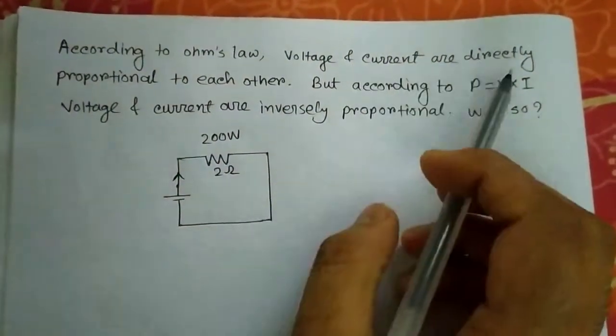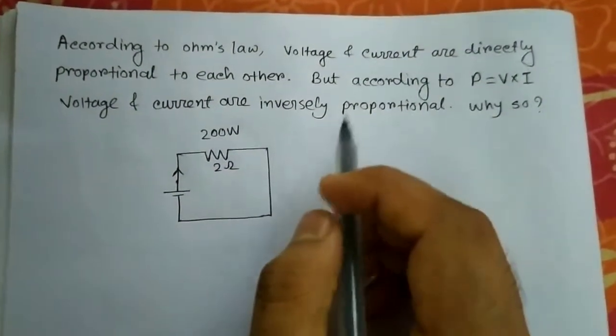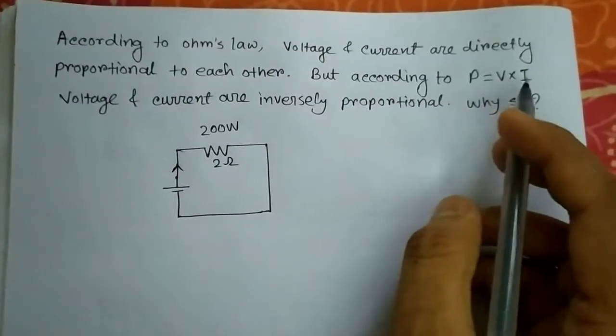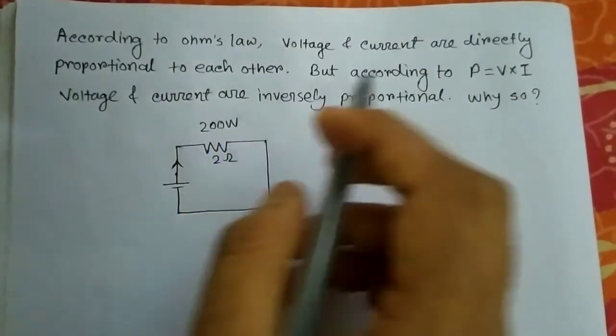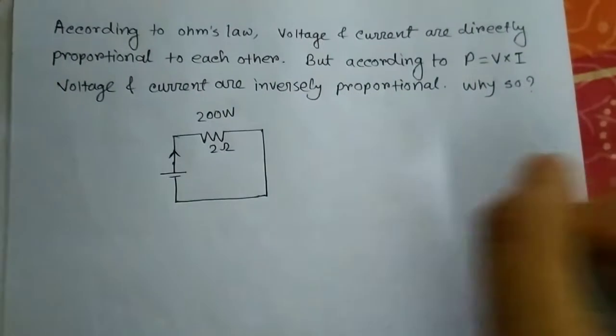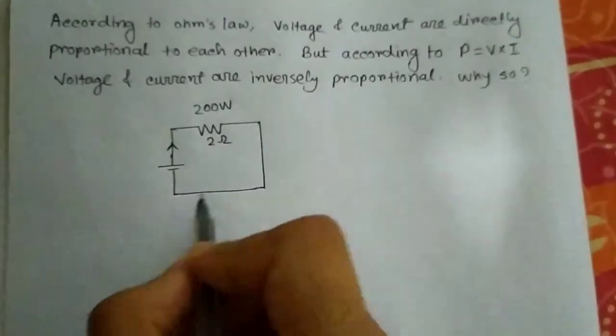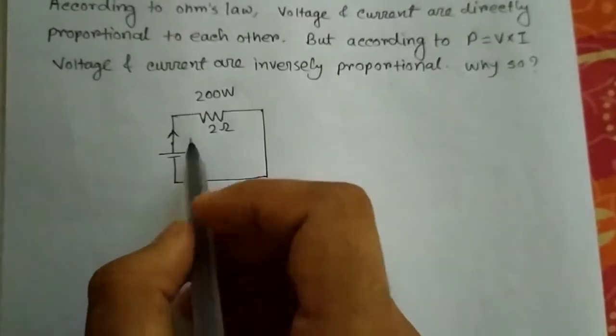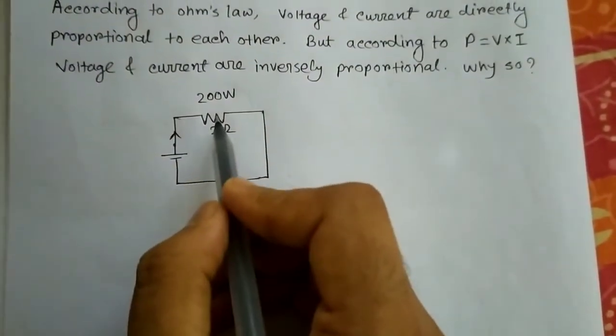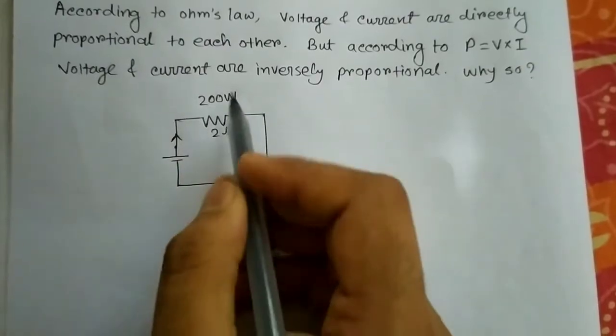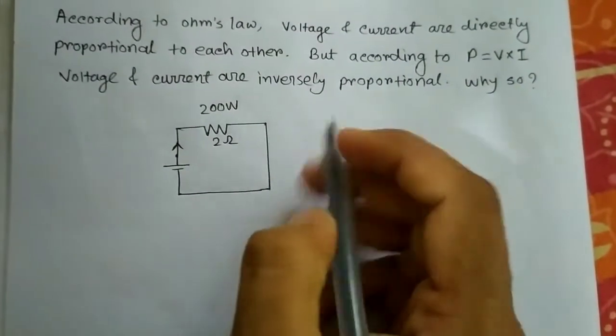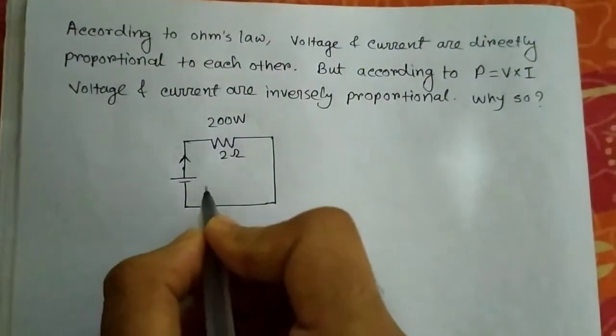According to Ohm's Law, voltage and current are directly proportional to each other. But according to P equals V into I, voltage and current are inversely proportional. Why so? See here we have taken a circuit, and the circuit has a resistance of 2 ohms which is capable of accepting 200 watts.